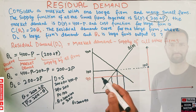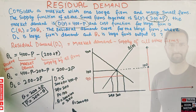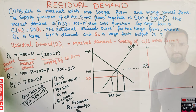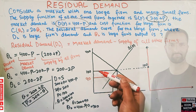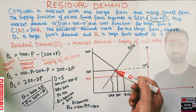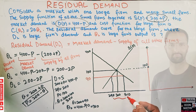When P = 90, the quantity demanded from the market demand function is Q_D = 400 − 90 = 310. We can clearly see that when price is below the equilibrium level of 100, quantity demanded exceeds quantity supplied by smaller firms.